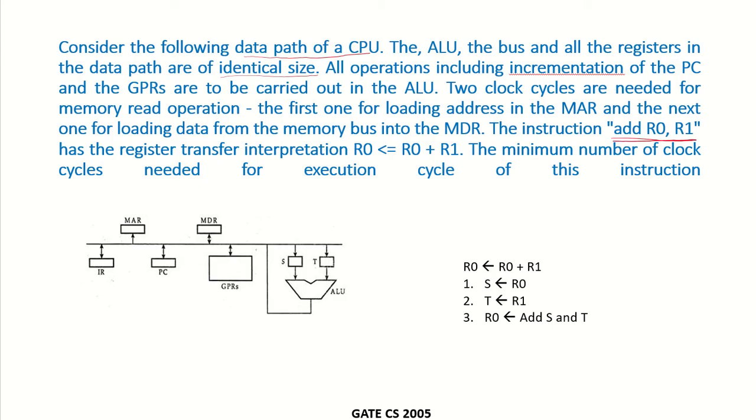The instruction add R0, R1 has the register transfer interpretation R0 = R0 + R1. The minimum number of clock cycles needed for the execution cycle of this instruction.